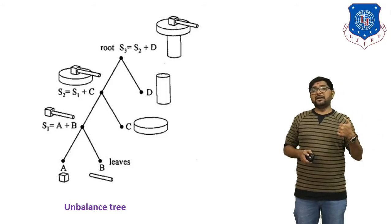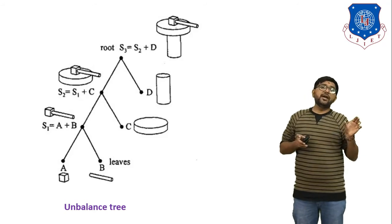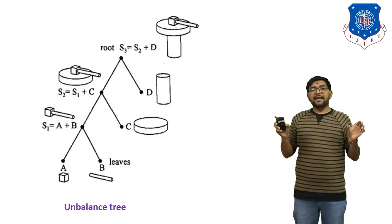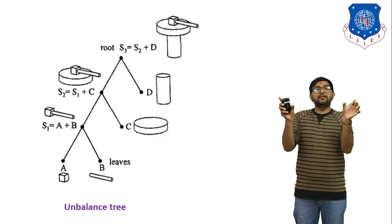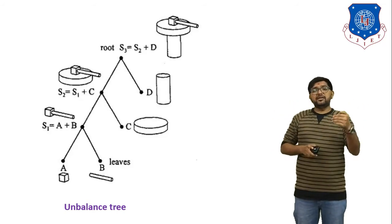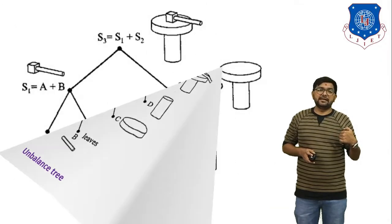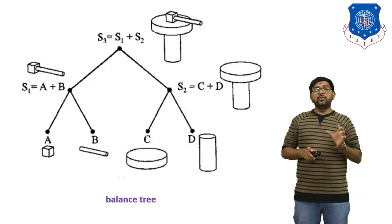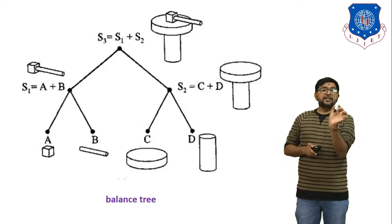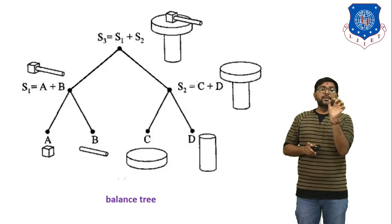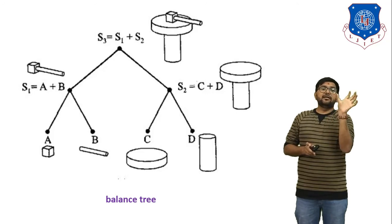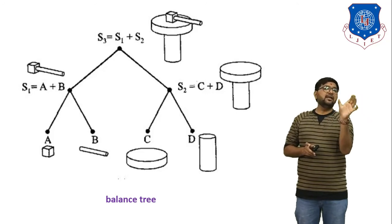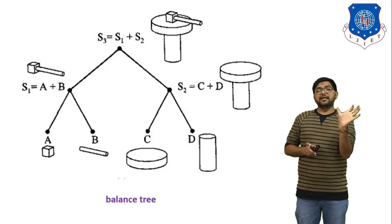In the balanced tree, first we combine A and B together, and separately combine C and D. After that we combine both results. This is the shortcut method — that is the balanced tree. From the figure, in the balanced tree object A is a cube, B looks like a cylinder. We first combine them with their faces and name the result S1, where S1 equals A plus B.